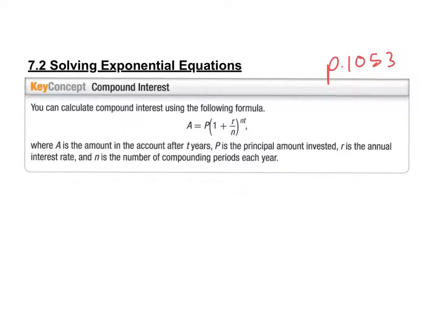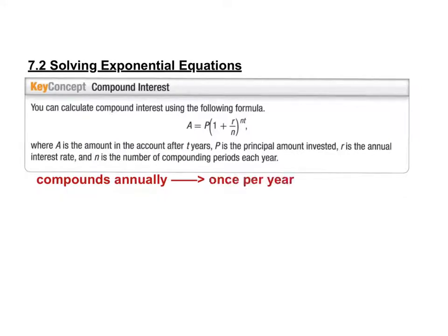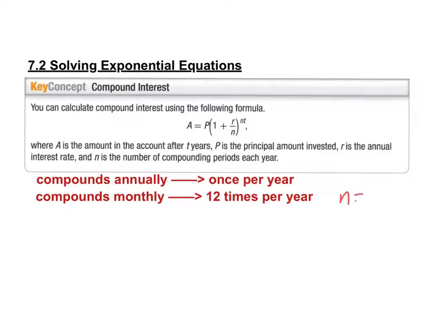Let's talk about different compounding periods. If it compounds annually, how many times a year does it compound? Once per year, so N equals 1. That's not a great account — you want something that compounds many times a year. The next one is compounds monthly: how many times per year? Twelve, because there are twelve months in a year, so N equals 12.